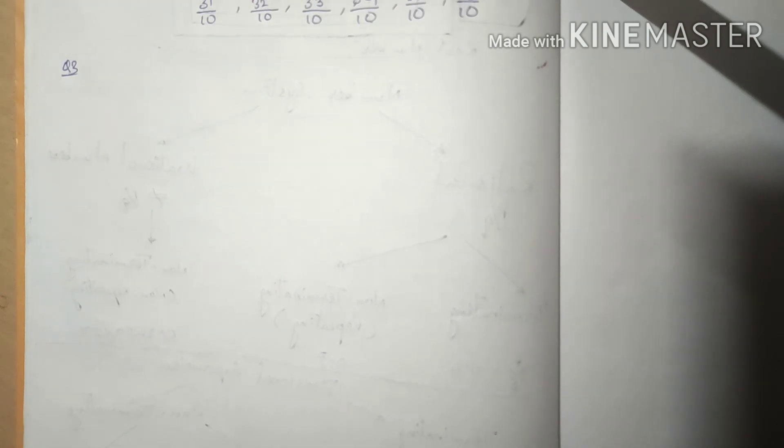Question number three is exactly the same. We have denominator five in place of one. We'll just multiply with ten on both numerator and denominator, and then we will get five rational numbers between three by five and four by five. It is exactly the same. I'll just write the answer. We can write any of the five numbers between these two numbers.